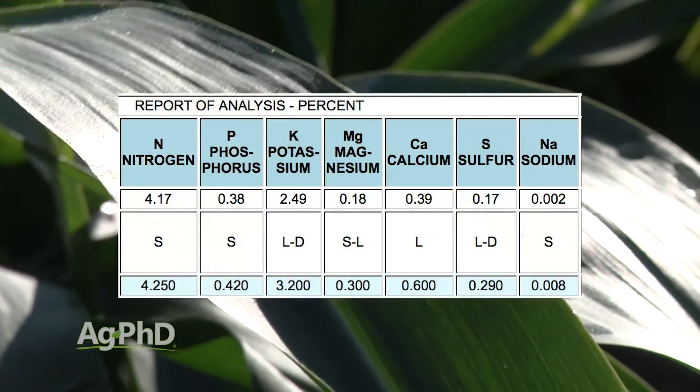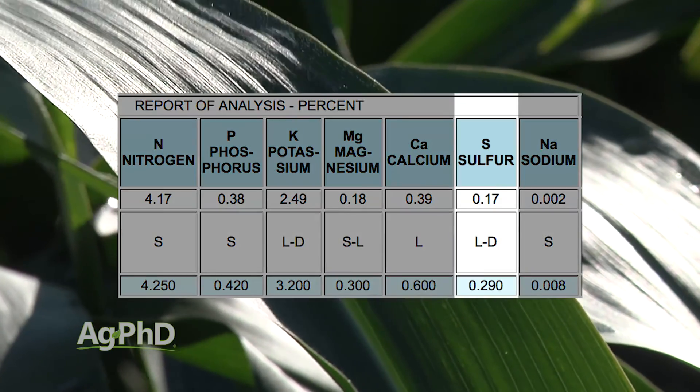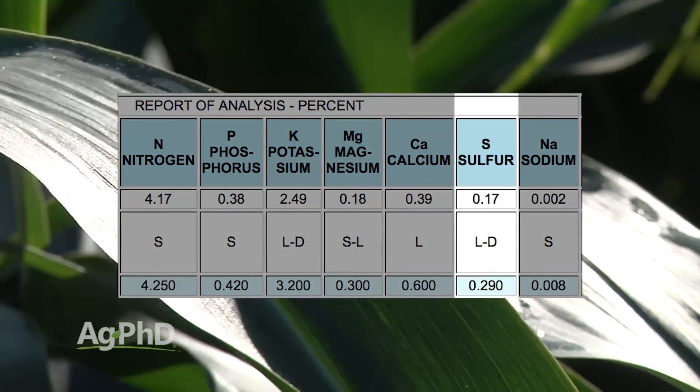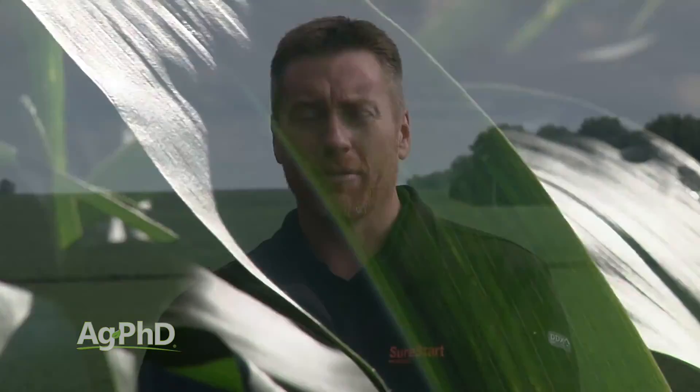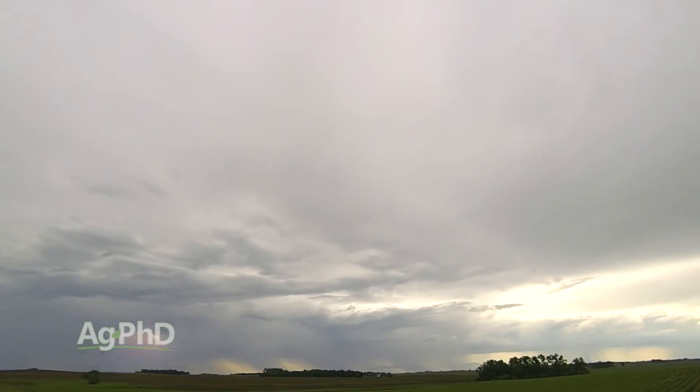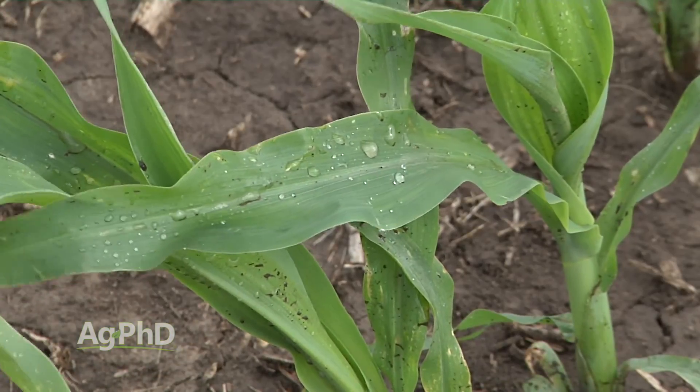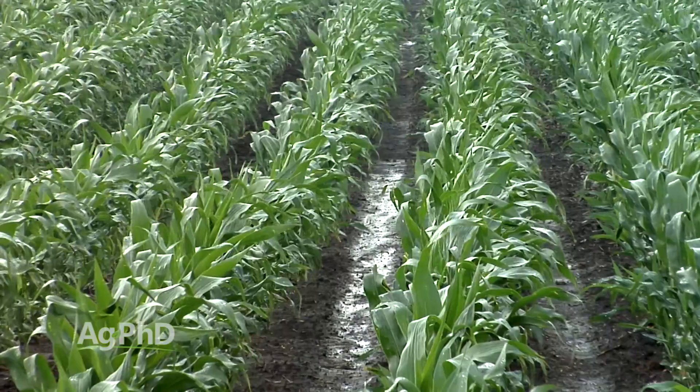Let's say that you have a tissue test that comes back short in sulfur, and immediately you think your tissue test says you're short in sulfur so you're going to go out and apply sulfur. There may be plenty of sulfur in your soil. It may just not have rained for a while, and once you get some moisture that sulfur becomes available and moves into the plant and everything's fine — it didn't cost you a penny just to wait a few days for rain. Or it could be that your roots are really small, but as soon as your roots get a little bigger they're going to hit a great big reservoir of sulfur in the soil.